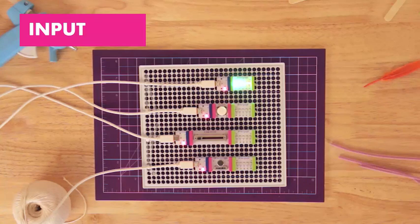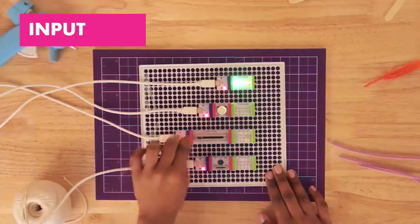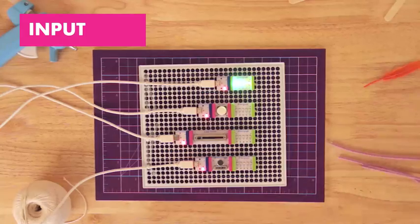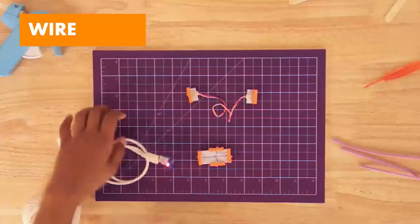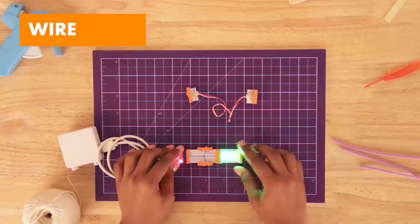The pink bits are inputs. They control the signal coming from the power. They take that signal and tell the output bits that come after them what to do. Think of orange bits as wires. They connect bits together in different ways.